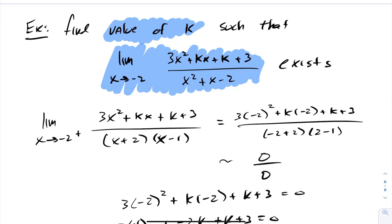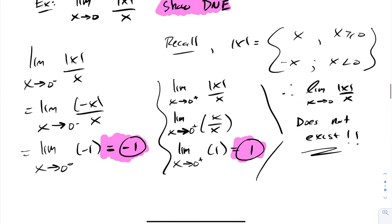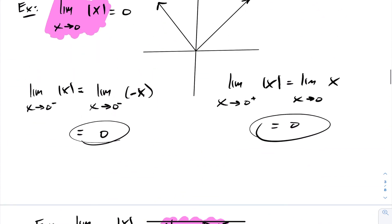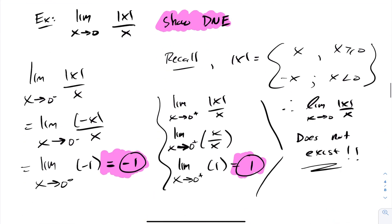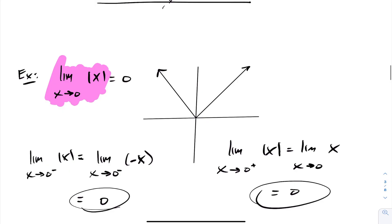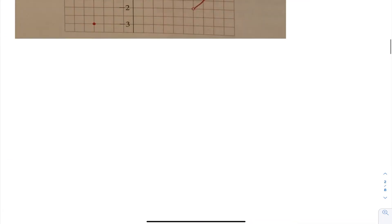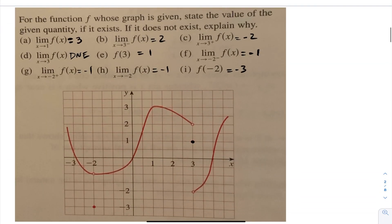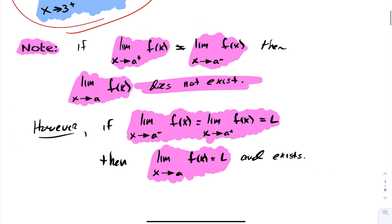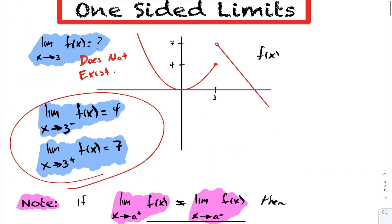That concludes one-sided limits. Please review these concepts and try them out on your own. Make sure you have a decent understanding of how the absolute value function works — that was an important part of the lesson. Take a look at the examples again and rewatch if needed. Thank you.